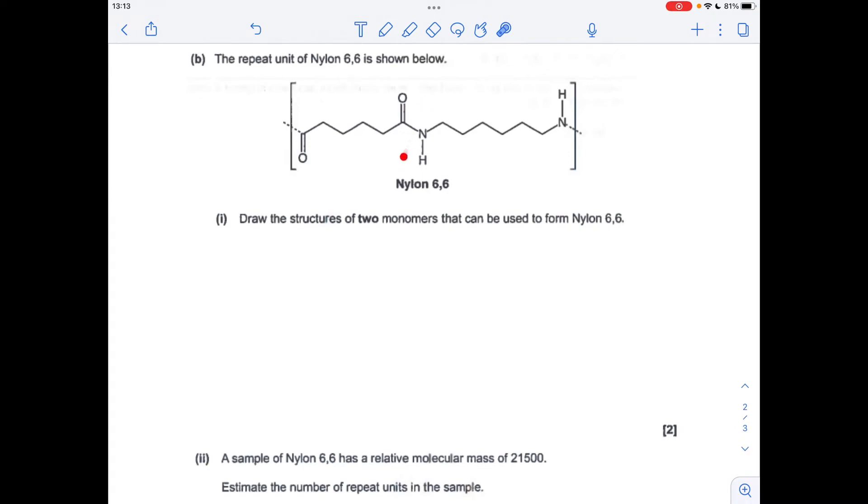Basically we need to break the join, so the amide bond - we're going to break it there, there and there. And we're going to turn the C=O bond back into a carboxylic acid group and we're going to turn the NH into an NH2 group. So there's the two monomers there.